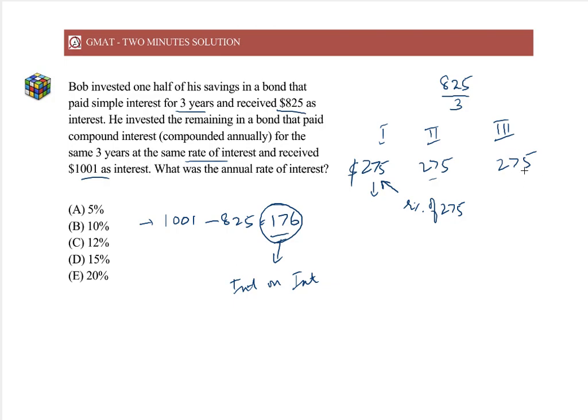In the third year, he got $275 on the principal, but he also got interest on this interest, on this interest, and on this interest. So basically, he got 2 times R percent of $275, plus he got R percent of R percent of $275.